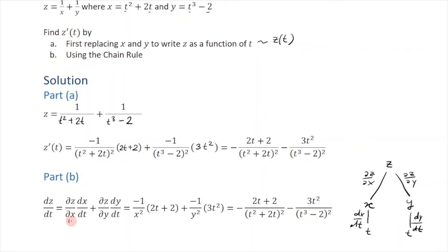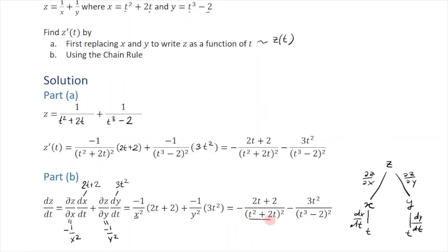Partial z over partial x equals negative 1 over x squared. Partial z over partial y equals negative 1 over y squared. These derivatives we already found: dx/dt gives 2t plus 2, and dy/dt gives 3t squared. Writing it all out, we get negative 1 over x squared times (2t plus 2) plus negative 1 over y squared times 3t squared. Plugging in x and y, we get the same answer as part A.